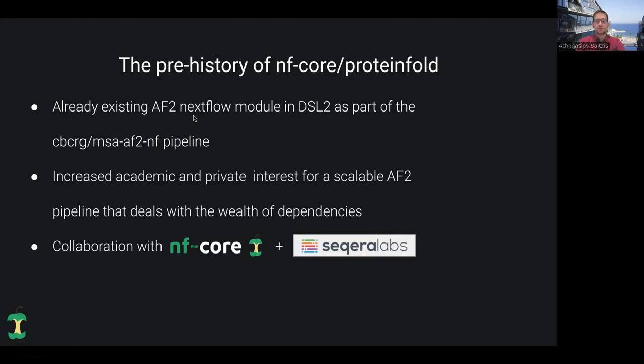we were interested to develop a pipeline that can take care of all these dependencies - the databases, the AlphaFold parameters - in order to be able to get fast and as reproducible as possible predictive models. After the release of our pipeline, many researchers got in contact with us from the academic or private sector that were interested in a scalable AlphaFold pipeline that deals with this problem with dependencies. For this reason, we got in contact with nf-core and Secura Labs, and we collaborated in order to develop such a scalable protein structure prediction pipeline.